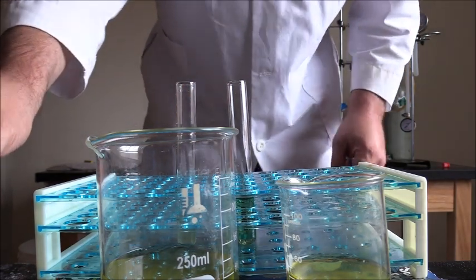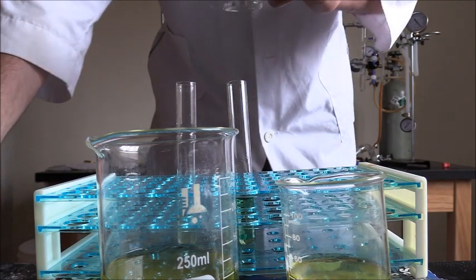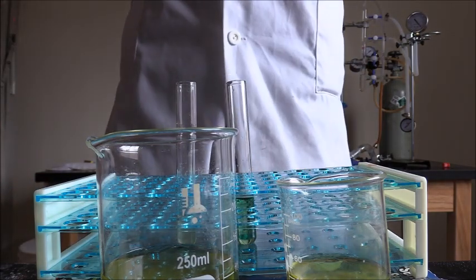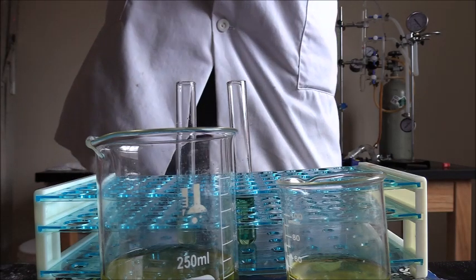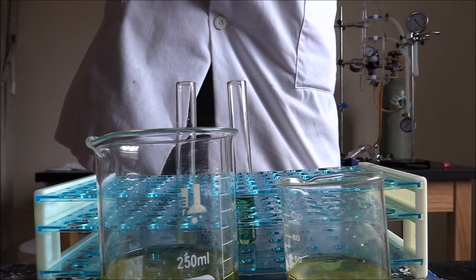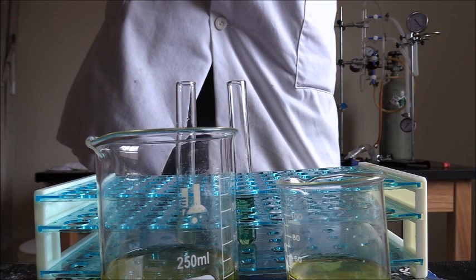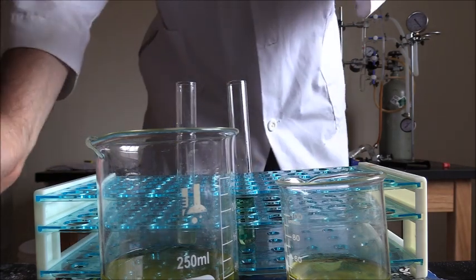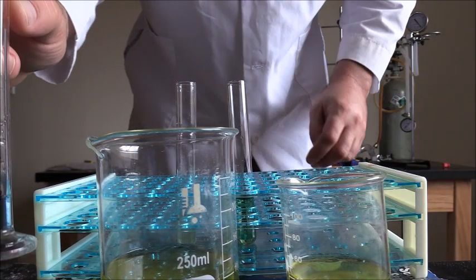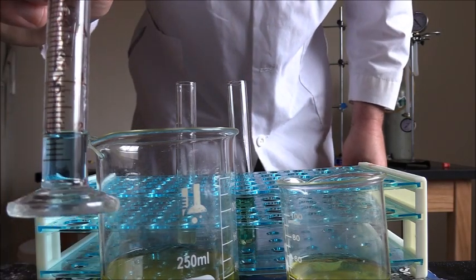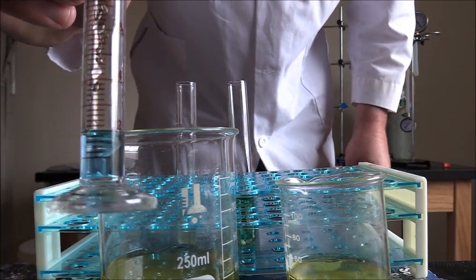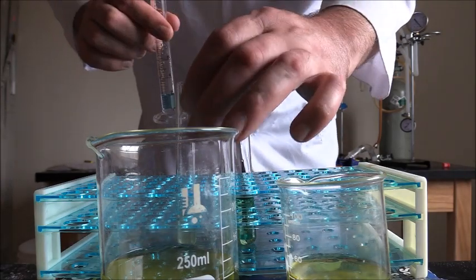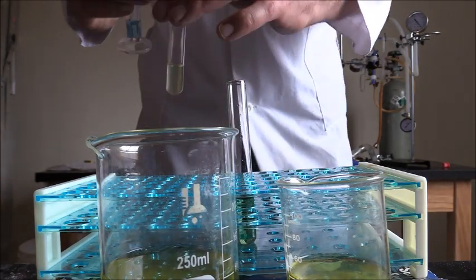And so now we're going to add the biuret reagent to the experimental solution. Measure out two milliliters of biuret and add that. Okay, so there is two milliliters of biuret. We're going to add that to our experimental solution.